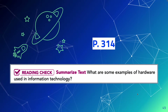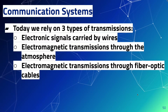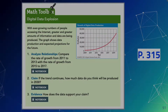On page 314, list some examples of hardware used in information technology — pause the video if you need time to answer. For communication systems today, we rely on three types of transmissions to relay information: electronic signals carried by wires, electromagnetic transmissions through the atmosphere, and electromagnetic transmissions through fiber optic cables.